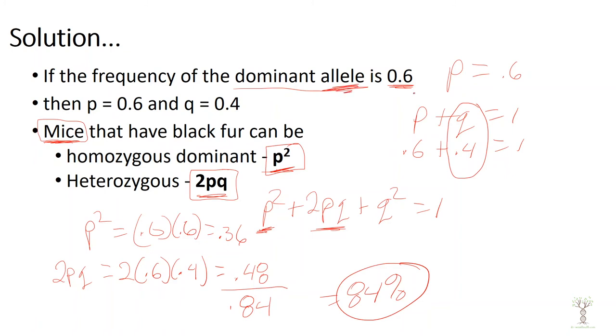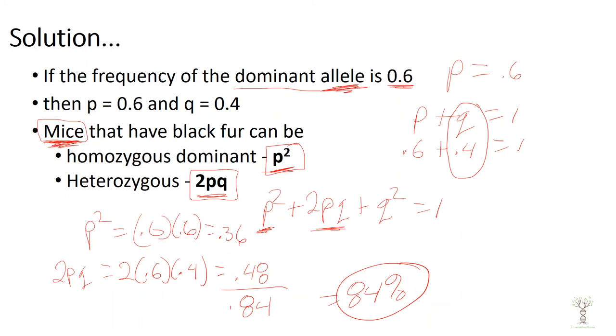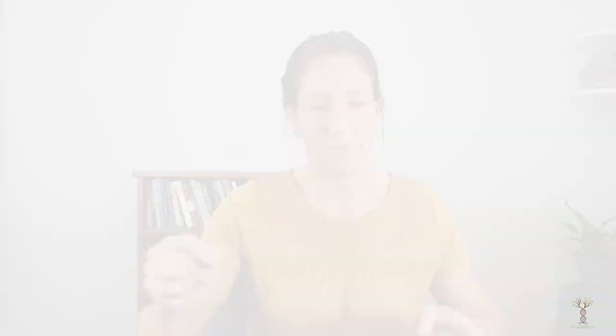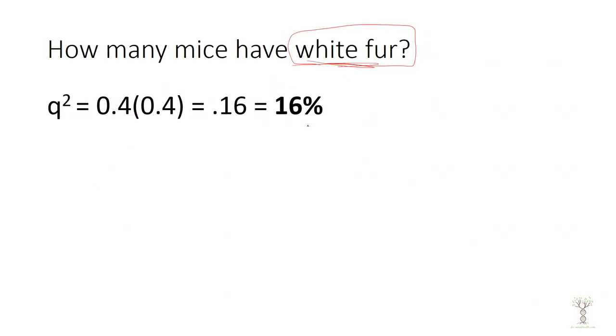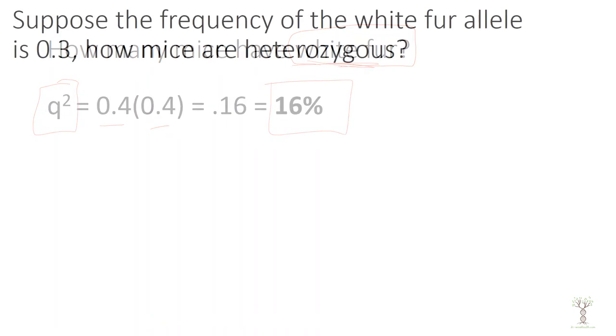What if I asked how many mice in this same population have white fur? We can do this two ways. Since 84% have black fur, we simply subtract from 100% to get 16% with white fur. Or using the equation: white fur mice have both recessive alleles, which is Q². Since Q = 0.4, we multiply 0.4 × 0.4 to get 0.16, or 16%.